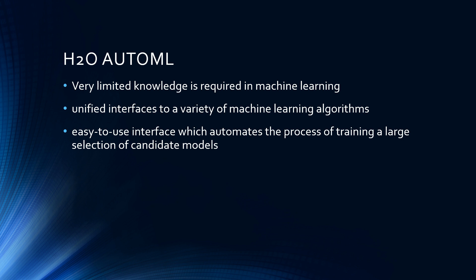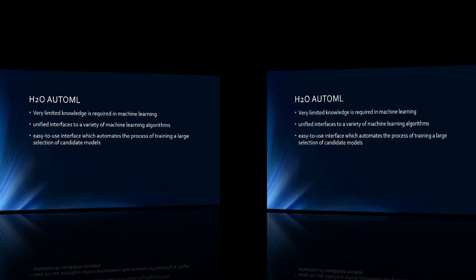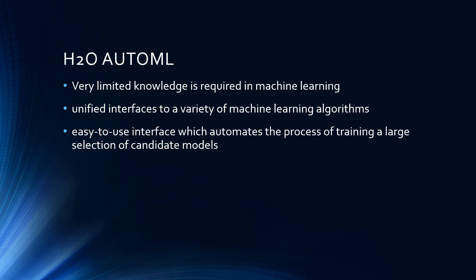Another advantage of using this package is that you can automate the process of training for a large number of candidate models. Since this is an automated interface, you don't have to tune the hyperparameters in your model. For example, if you run a gradient boosting algorithm or a deep learning algorithm, you normally have to specify your hyperparameters and their ranges — but using this h2o AutoML package, those things are automatically done for you.